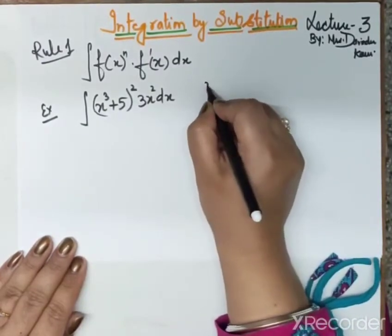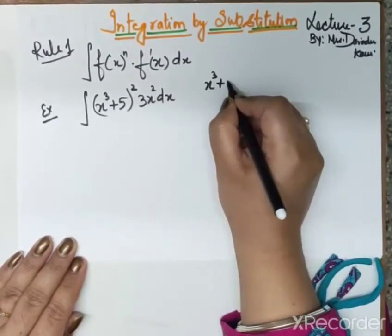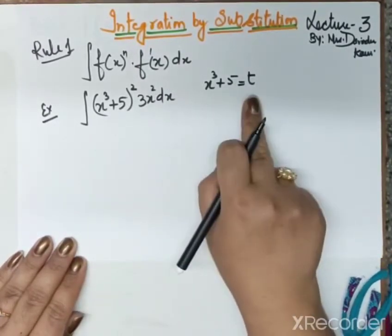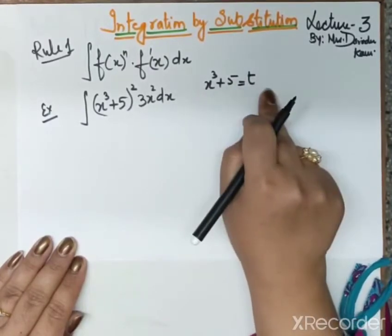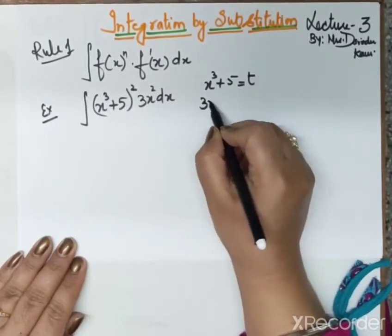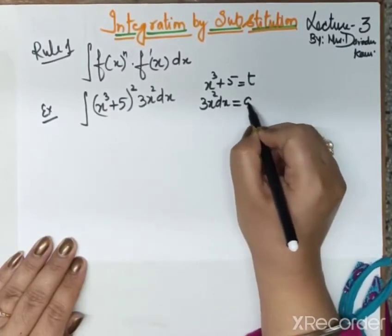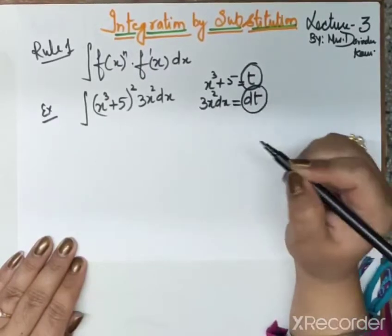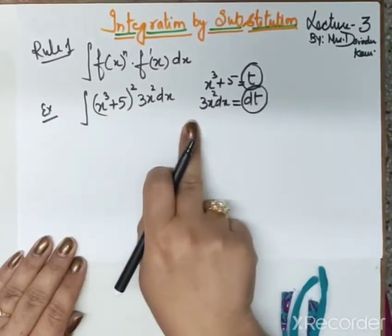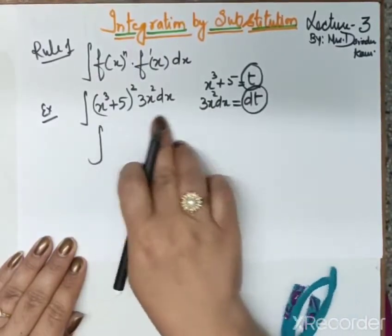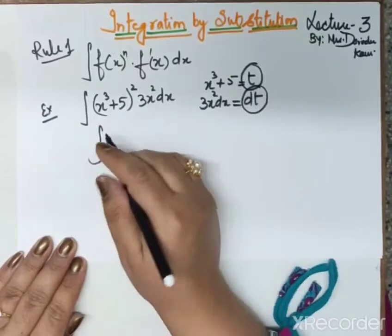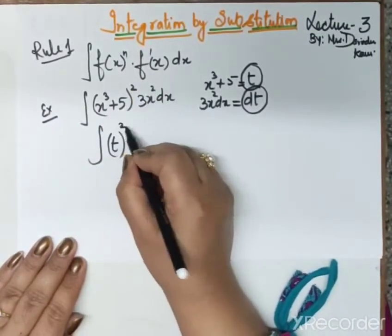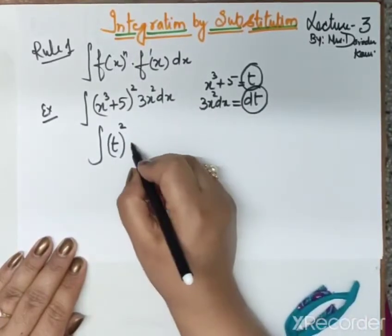So what is the first step? In the first step we will put x³ + 5 = t. Then we are going to differentiate this expression, so we get 3x² dx = dt. We get two values in the form of t and dt. Now we are going to change our main expression: instead of x³ + 5 we put t, and in place of 3x² dx we write dt.